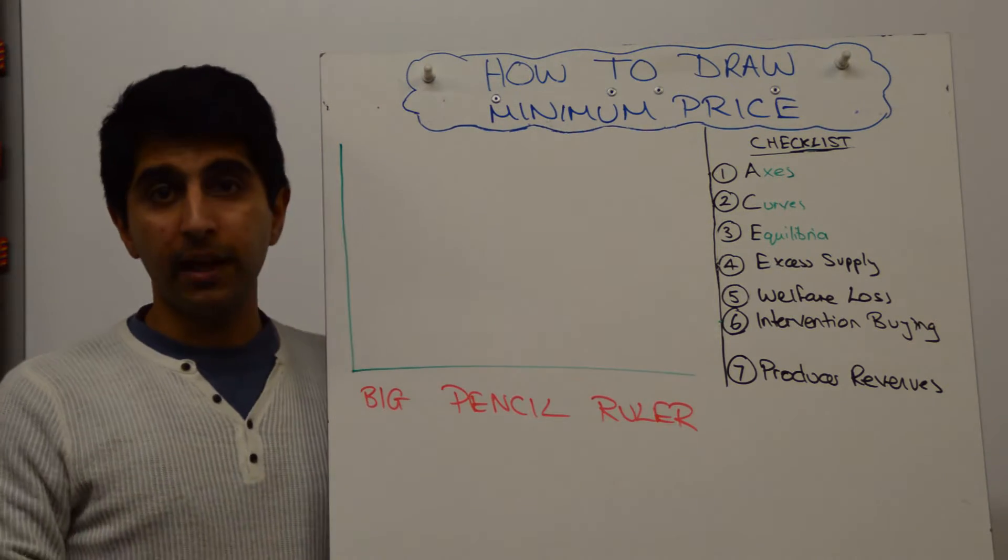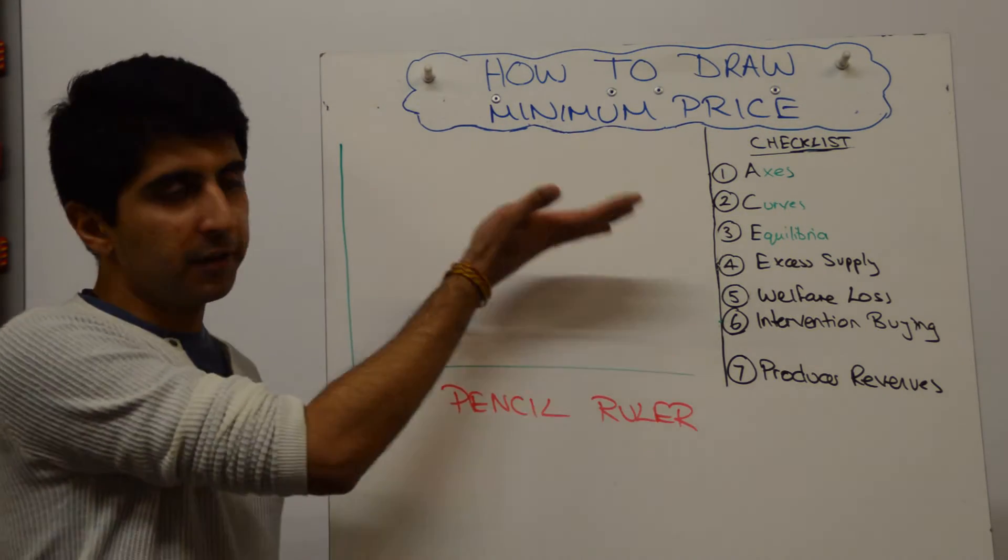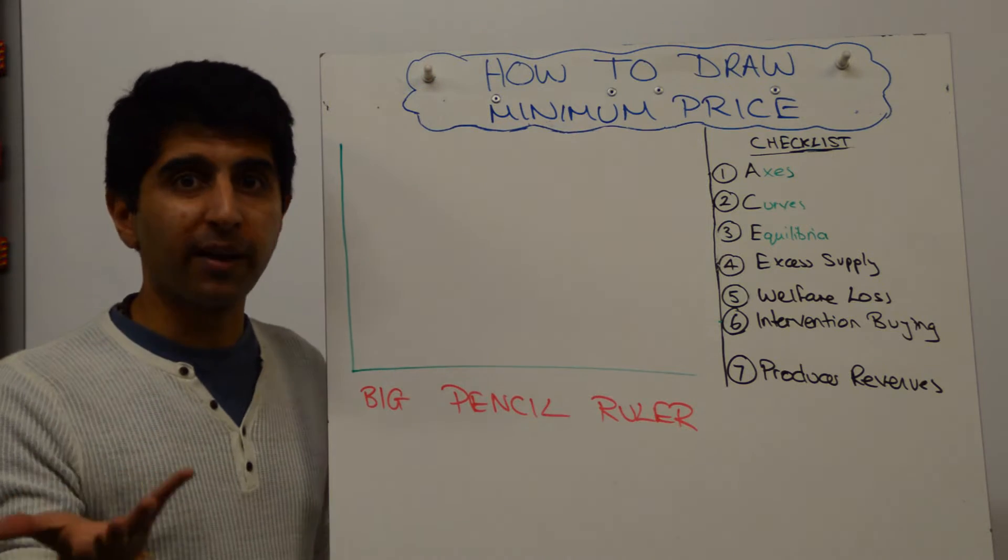Another name for a minimum price is a price floor. The price can't fall below it, it is the floor price essentially.